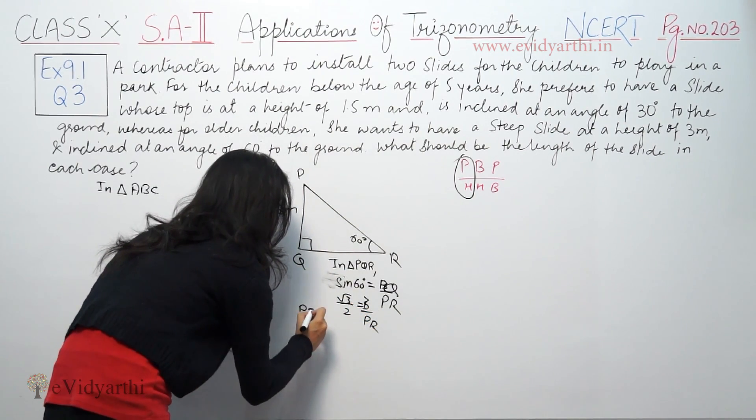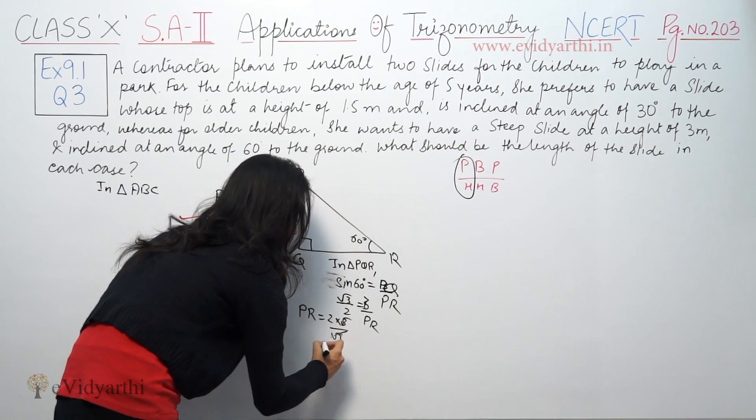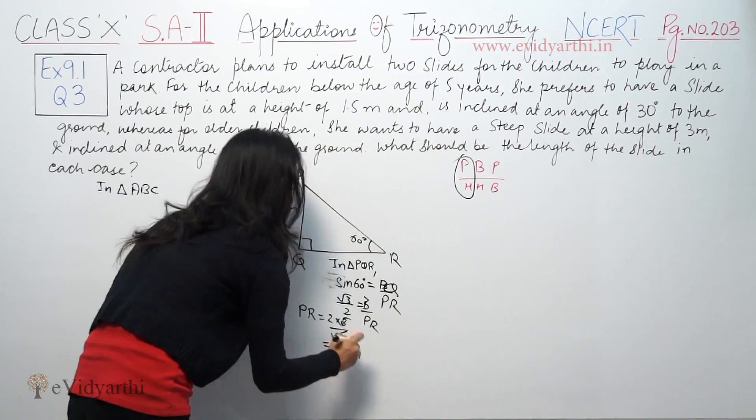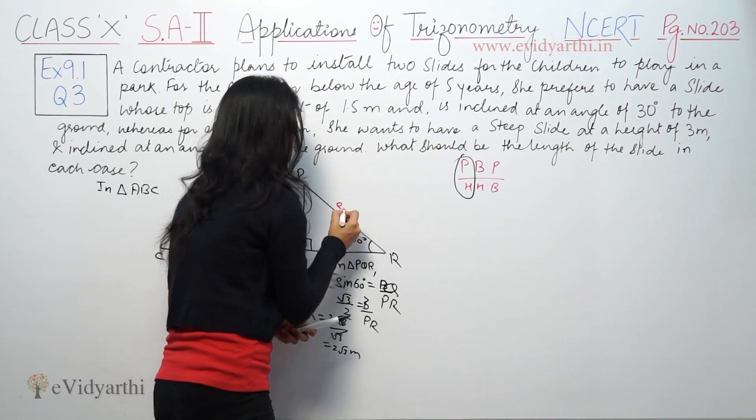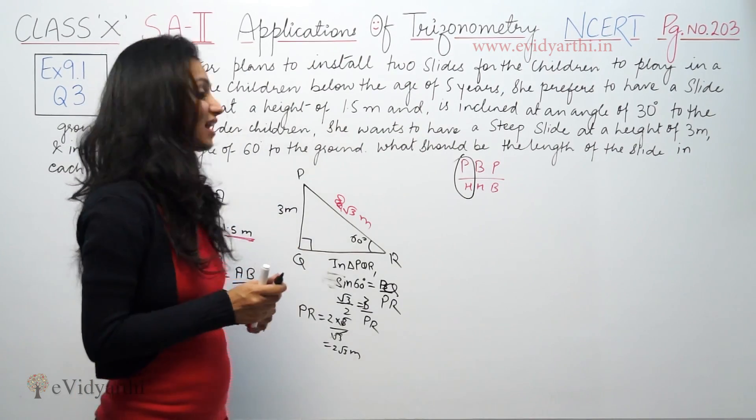So PR is equal to 2 into 3 by root 3, which is 2 root 3 meters.